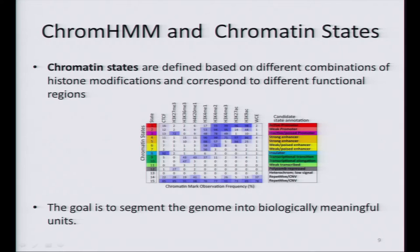One important thing to keep in mind: whatever model you run using histone modifications will not give you these labels automatically. There is no automatic labeling. You run your model and you get a table like this, and then you have to assign labels to these states. The way to do this is to use other annotations for help. For example, if you see that one state is really enriched at the TSS, it's probably a promoter state. The goal is to segment the genome into biologically meaningful units.